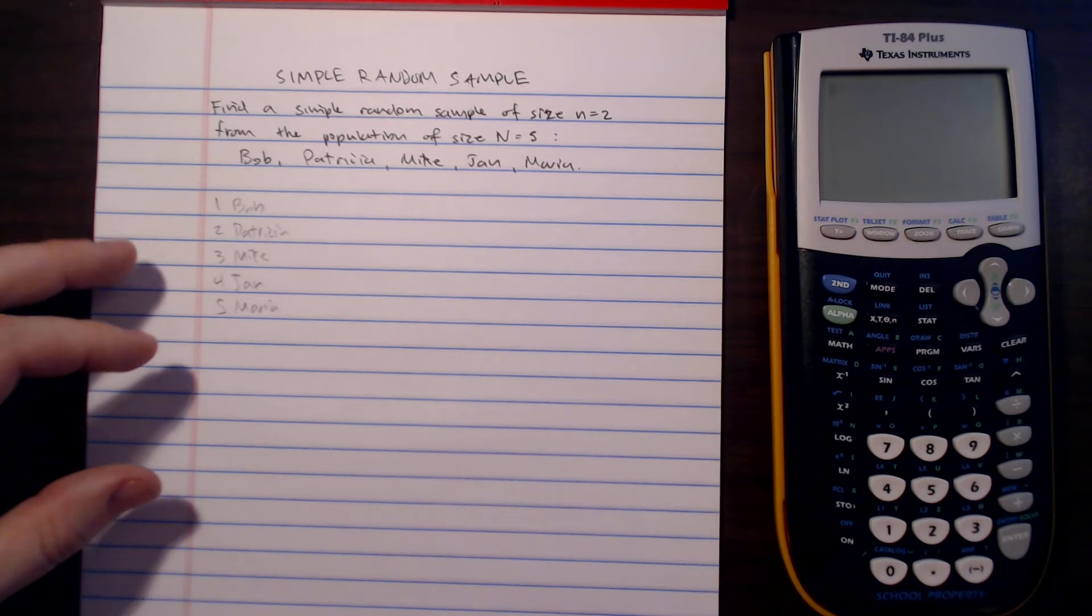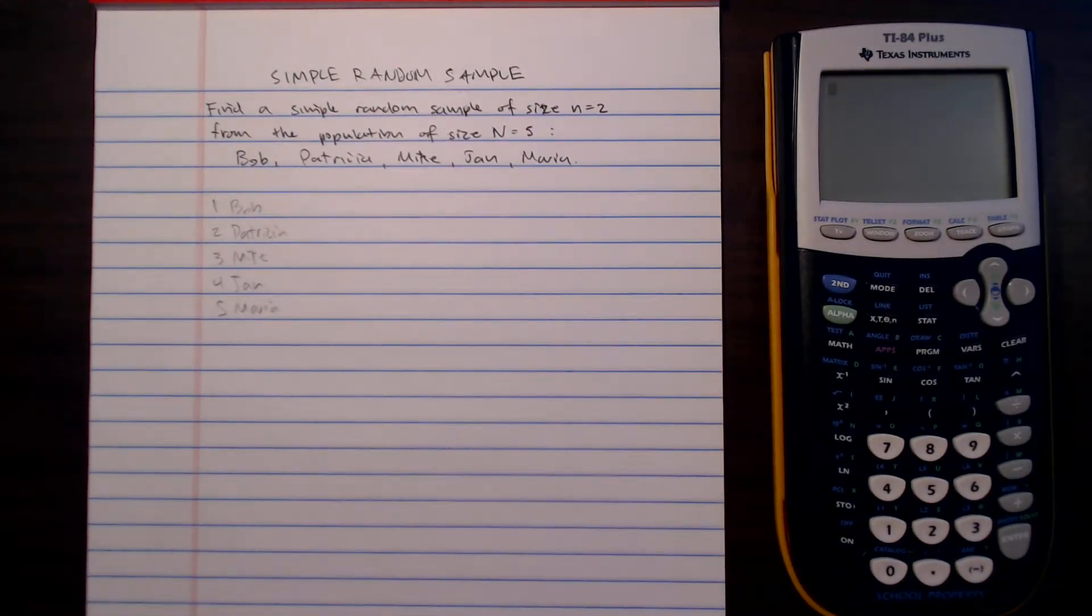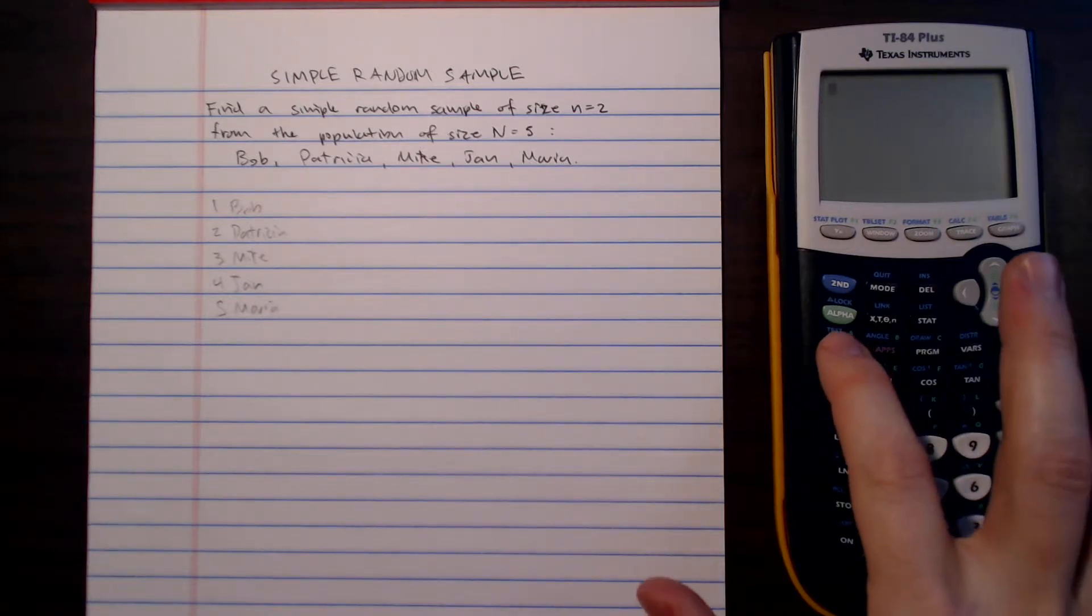So I have enumerated our list. We have five people and I want to choose two of them. I can use a TI-84 Plus to do this, and this is slightly different than using the TI-84 Plus CE. The first thing we're going to do is hit math.